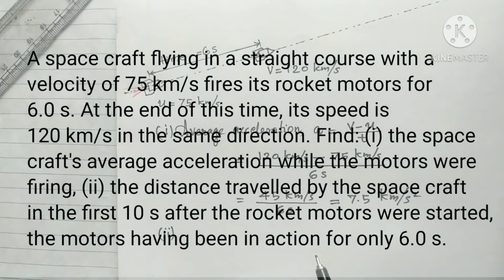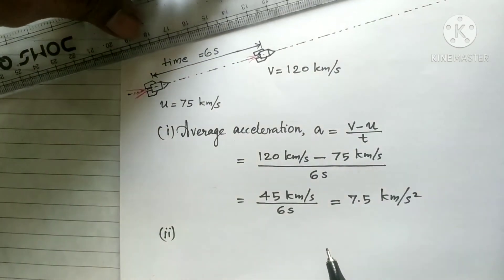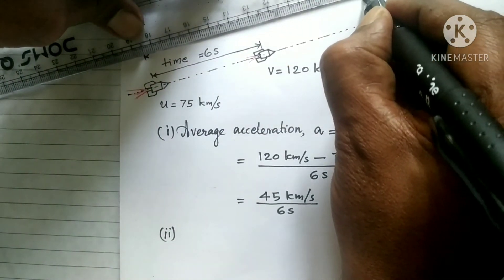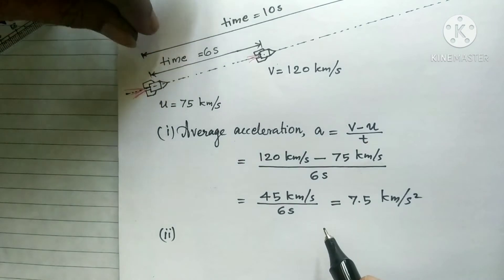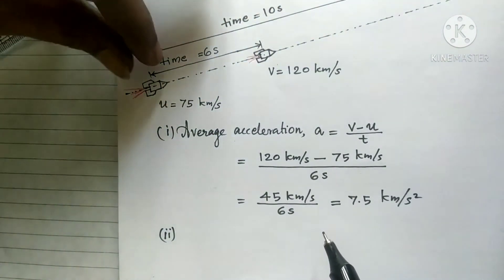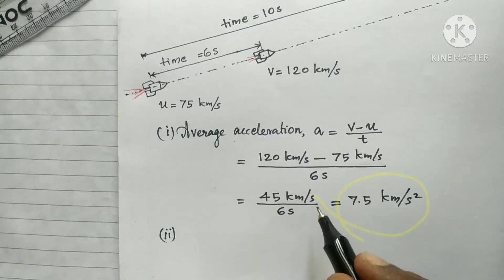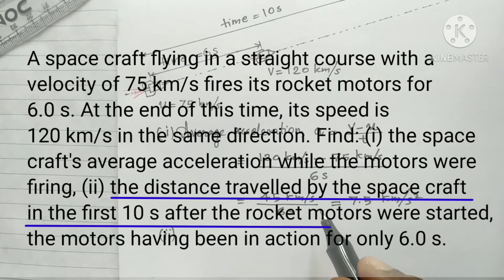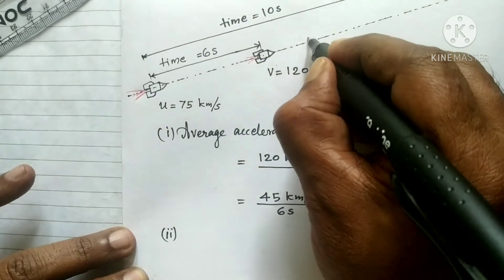In the second part of the question, we have to find the distance traveled by the spacecraft in the first 10 seconds after the rocket motors were started. The motors were in action for only six seconds, so we consider from 0 to 10 seconds.